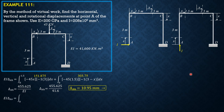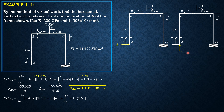EI × delta_A_vertical equals the integral from 0 to 1.5 of (−45X)(1 × (1.5 + X)) dx. The moment in this section is positive — it is clockwise — with moment arm (1.5 + X). Then, in the next section, we add the integral from 0 to 3 of (−45 × 1.5)(1 × 3) dx. The vertical moment arm is 3, so the virtual moment is positive 1 times 3.